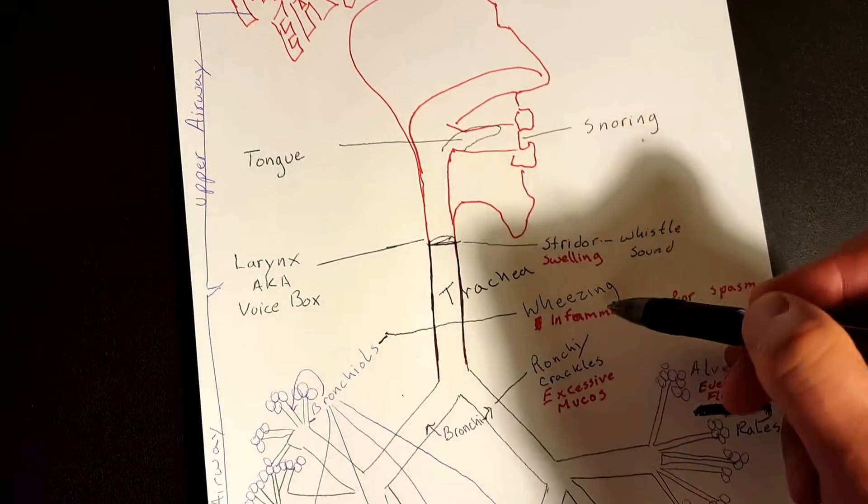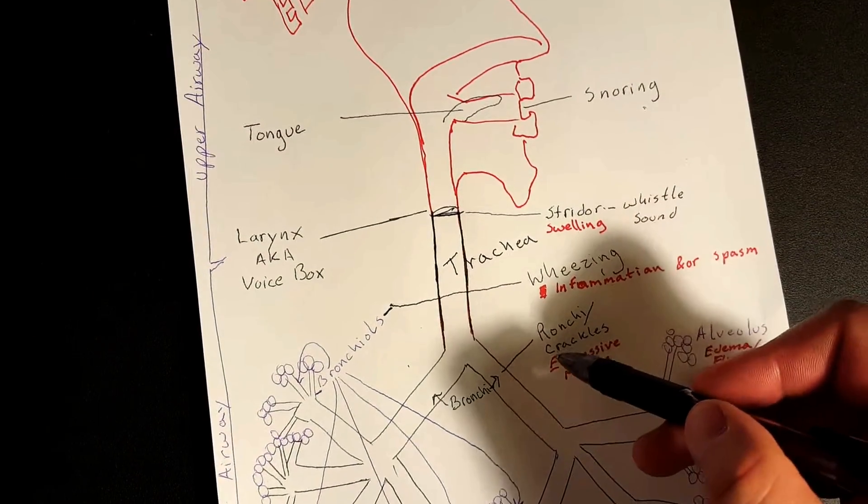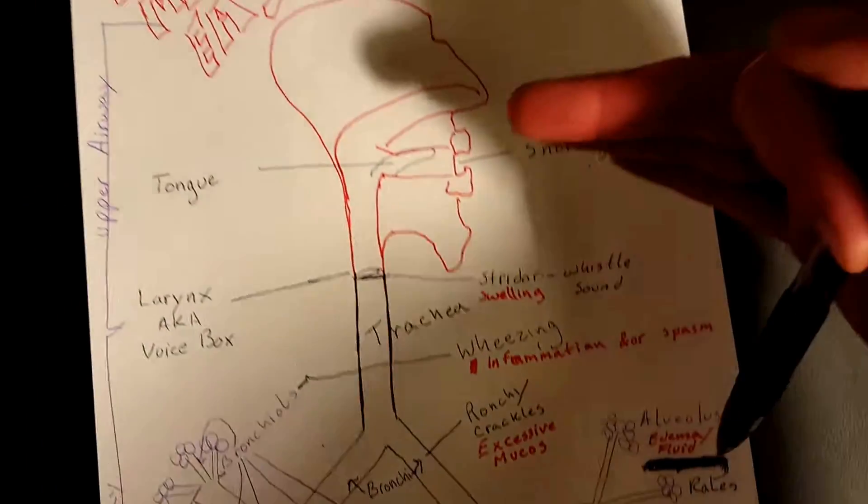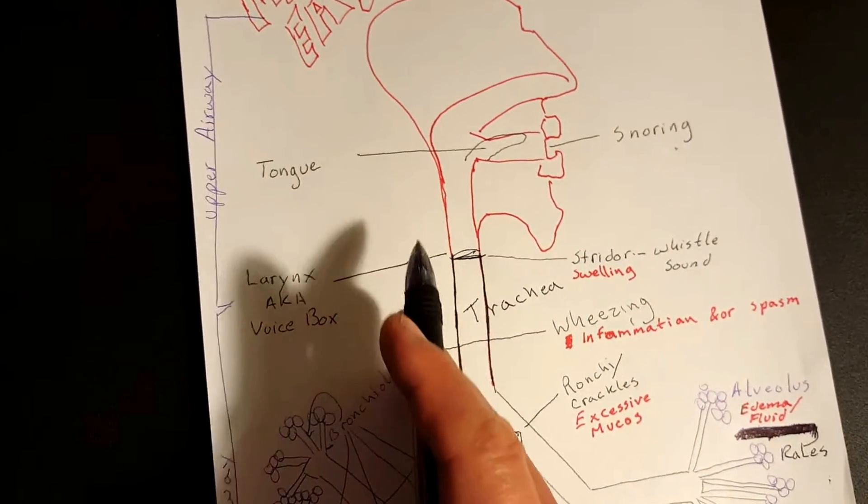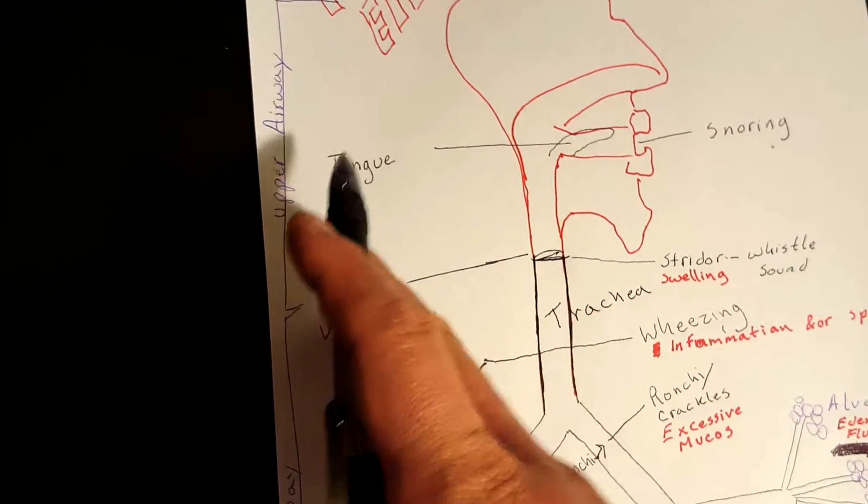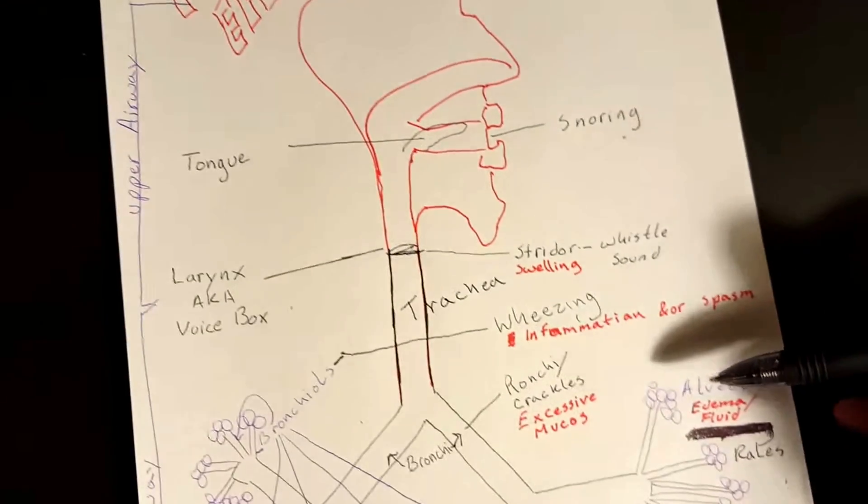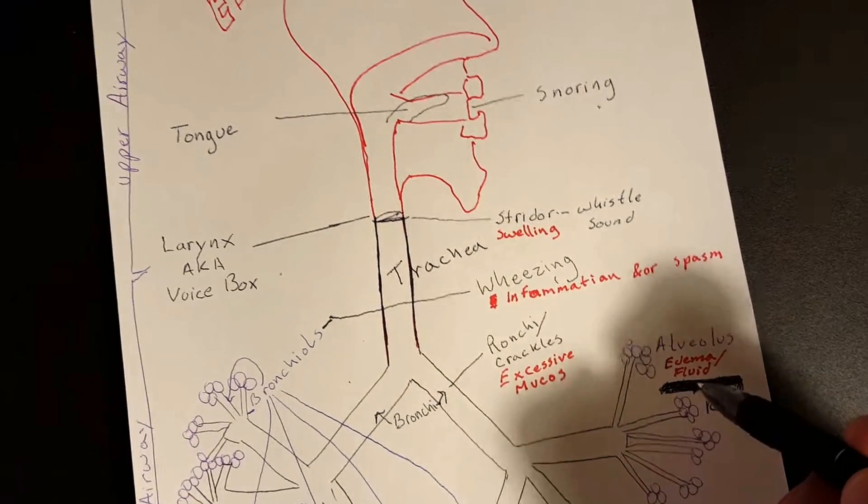All right, so we have snoring, stridor, wheezing, ronchi or crackles, and we have rails. So I'm going to start from the top and go all the way down. I tried to put the actual location on the left-hand side and the issue on the right-hand side, but I couldn't do that with the alveoli, but hopefully it still helps you out.